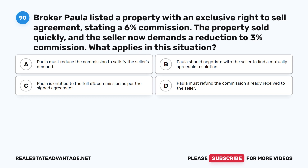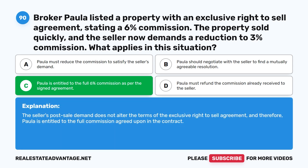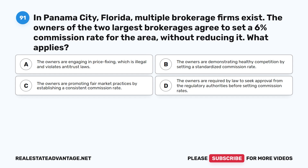Question 90: Broker Paula listed a property with an exclusive right to sell agreement stating a 6% commission. The property sold quickly and the seller now demands a reduction to 3% commission. What applies in this situation? A. Paula must reduce the commission to satisfy the seller's demand. B. Paula should negotiate with the seller to find a mutually agreeable resolution. C. Paula is entitled to the full 6% commission as per the signed agreement. D. Paula must refund the commission already received. The correct answer is C. The seller's post-sale demand does not alter the terms of the exclusive right to sell agreement; Paula is entitled to the full commission agreed upon in the contract.